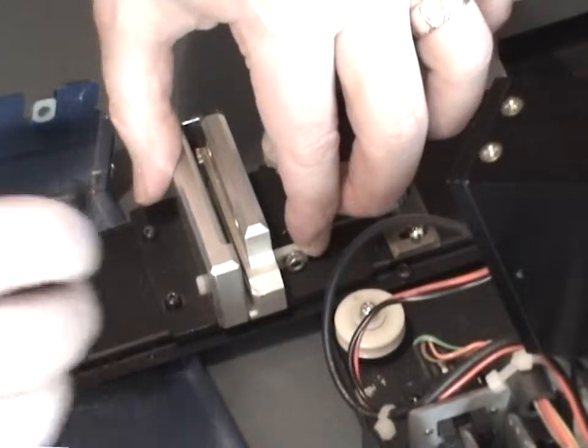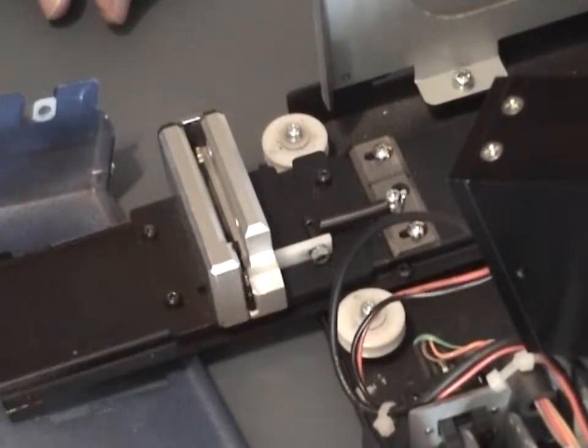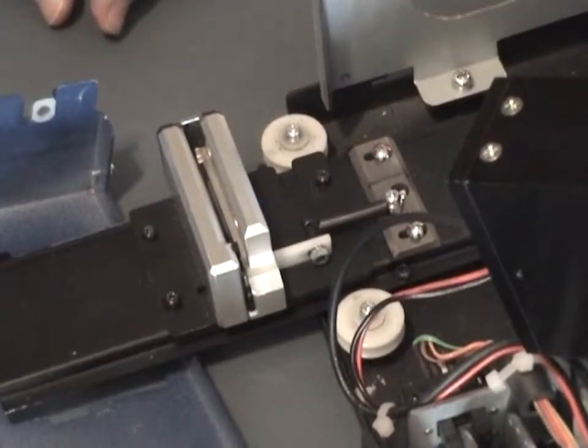If the carrier plate needs to be replaced, hold in the white locking mechanism and slide the plate in the bottom of the block. Make sure the plate locks into place.